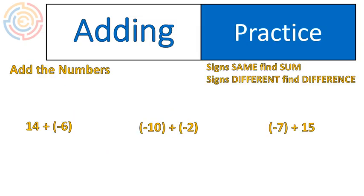Let's do some practice. Here are our three examples. The rules are up there on the top. If the signs are the same, find the sum. If the signs are different, find the difference. Go ahead and solve those three, and then we'll take a look at the answers.